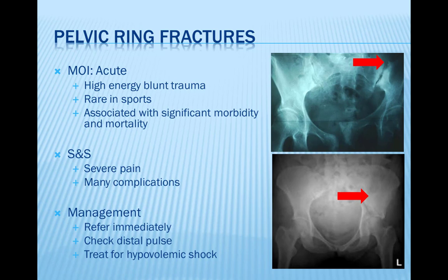In pelvic ring fractures, the pelvic ring is disrupted anteriorly and posteriorly in at least two or more places. The pelvic ring is composed of three bones: the paired innominate bones and the sacrum. The pelvic bones are stabilized by supporting ligaments. The most common cause in the elderly is a fall, but the most significant fractures involve high energy forces such as a motor vehicle crash, cycling accidents, or falling from a significant height.